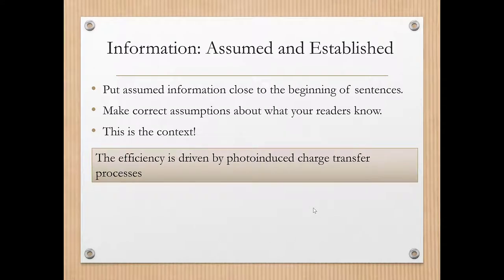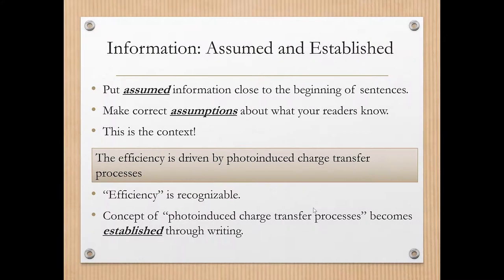Let's look at an example. I'm going to put up a series of sentences over the next few slides. The first of these sentences is: 'The efficiency is driven by photo-induced charge transfer processes.' What we automatically recognize is that we must put that assumed information close to the beginning of the sentences and the correct assumptions must be made. In this case, I'm assuming that the audience knows what efficiency is and that it is recognizable. However, this concept of photo-induced charge transfer processes is not already recognizable by the reader — it becomes established through the writing. This will be the important point of the paragraph.